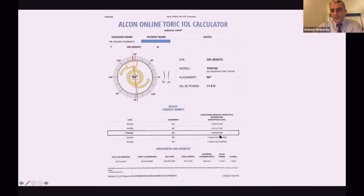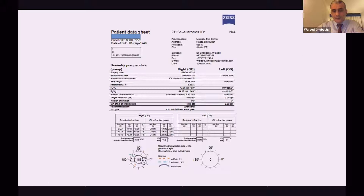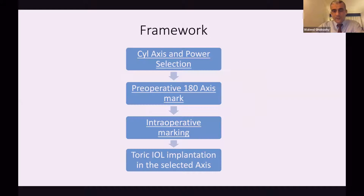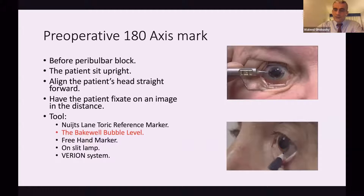This is the printout from Zeiss — it depends upon your preference. And this is the printout from the Assort online calculator, which has all the needed A-constants for all available IOLs. The second step is the preoperative marking of the 180-degree axis. This should be done in the preoperative room before starting the peribulbar or retrobulbar anesthesia. The patient should be upright, sitting with the head straight, and focusing on a distant image. My preference is the marker with the air bubble, though a simple slit-lamp marker works as well — just mark the axis at 90 and 180 degrees.